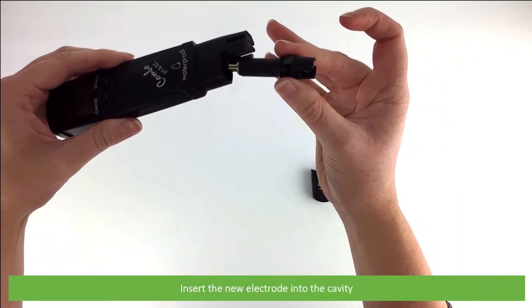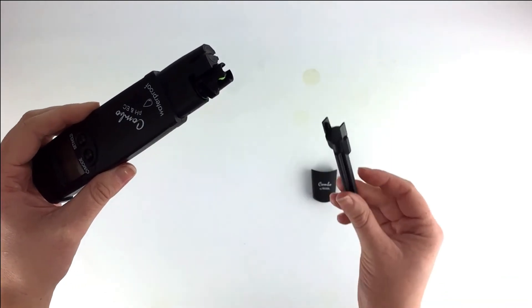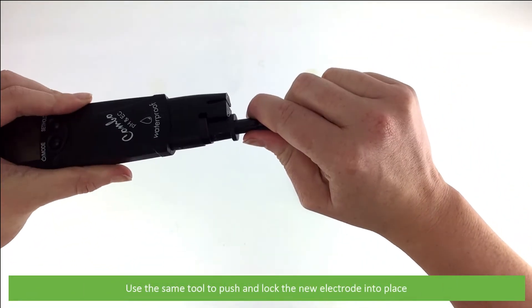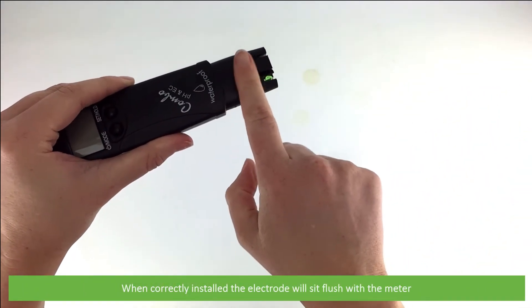Insert the new electrode into the cavity. Then use the same tool to push and lock the electrode into place. When correctly installed, the electrode will sit flush with the meter.